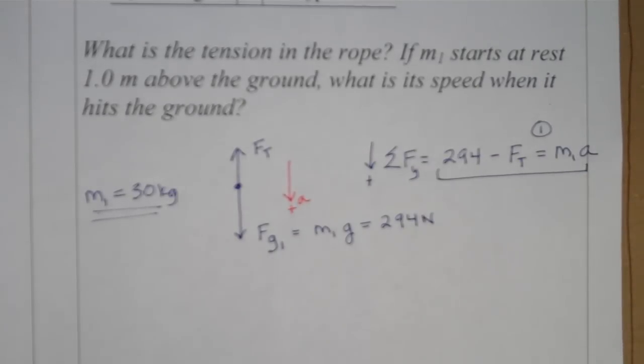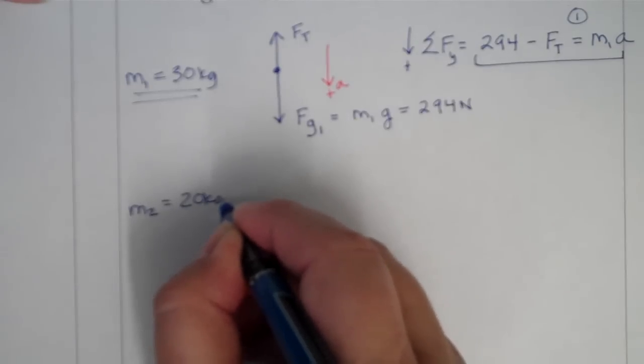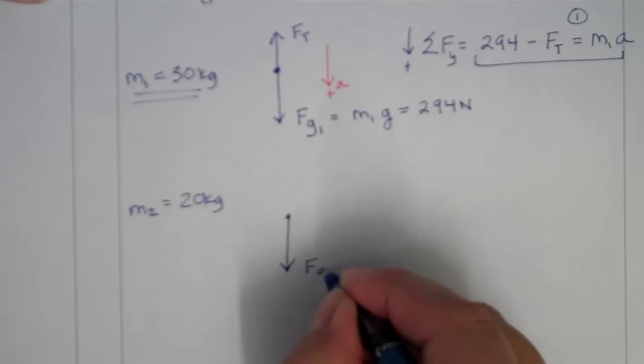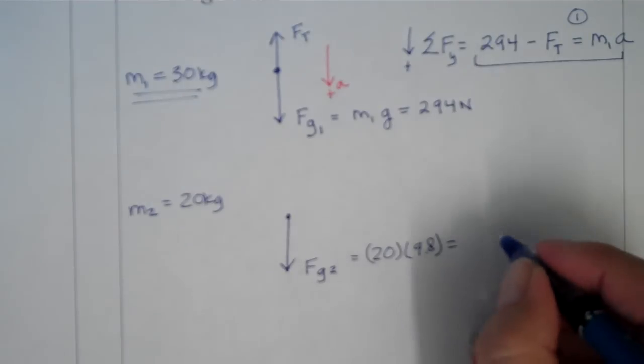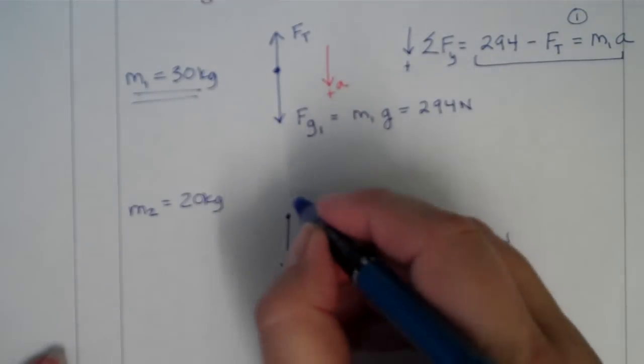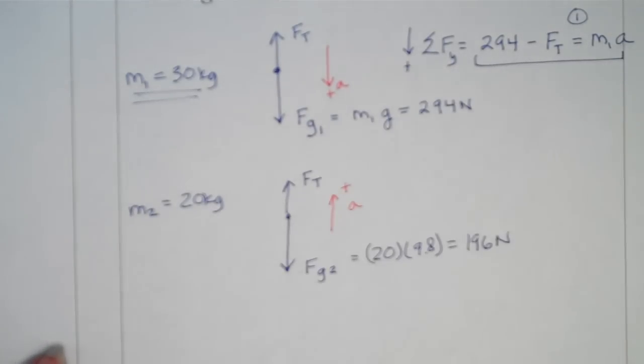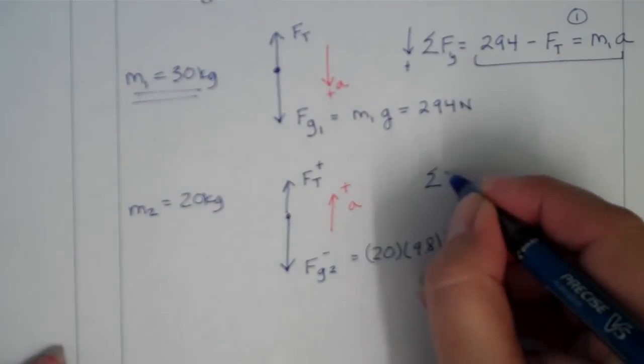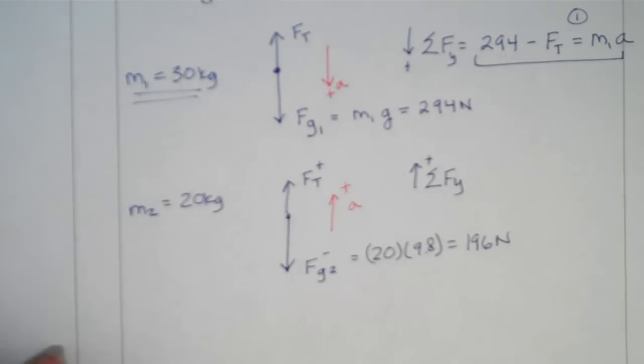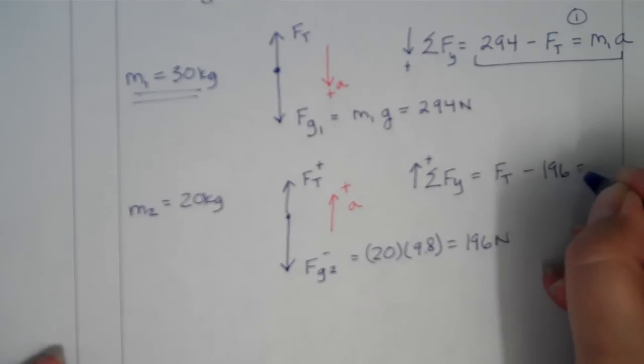Two unknowns, so we need a second equation. Let's do our picture for mass 2, which is only 20 kilograms. Free body diagram. Force of gravity 2, 20 kilograms times 9.8, so the weight of this one is 196 newtons, and tension pulling up. And this one has acceleration upward. So our acceleration defines our coordinate system. This is going to be a positive force, and this one is a negative force. Let's add those together with up being positive. That means the force of tension is up, weight is pulling down, 196, and this is accelerating mass 2. So there's our second equation.